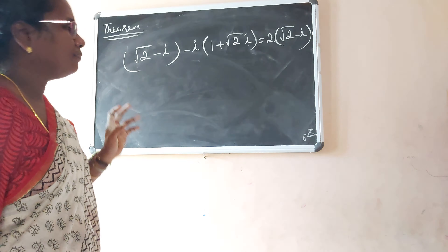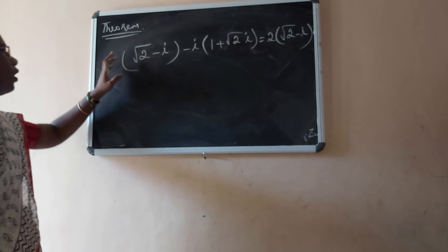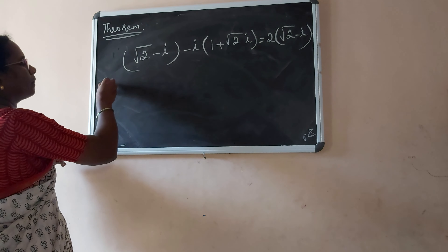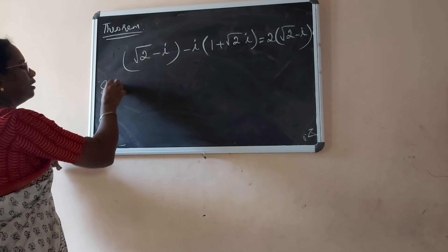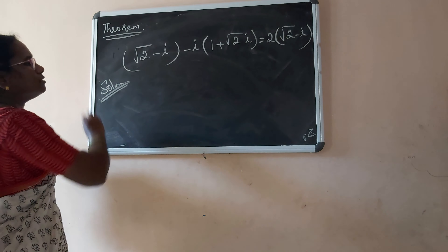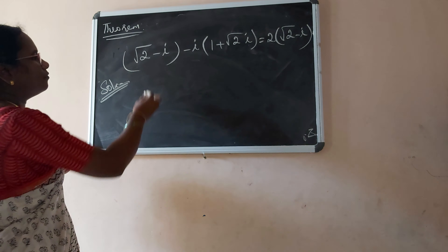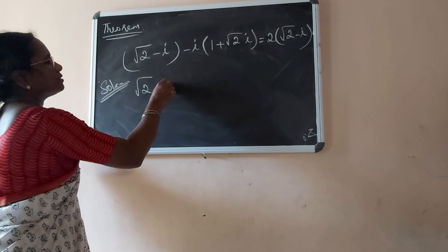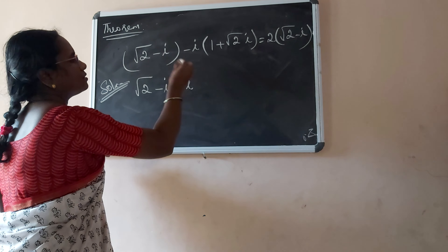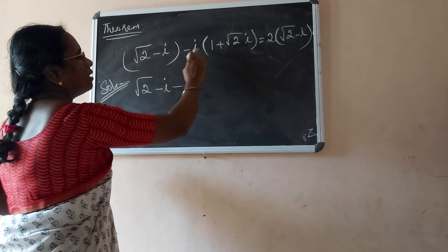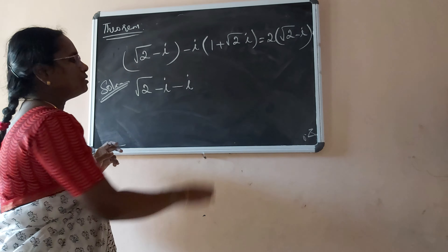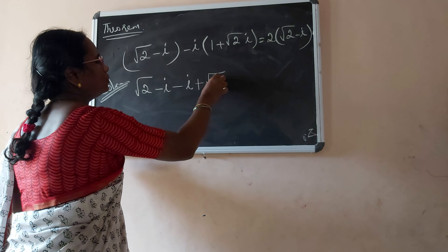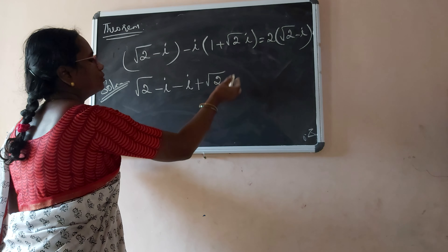Another remark: a complex number Z equal to X plus iY can be represented as an ordered pair of real numbers. For example, Z is equal to X plus iY can be written as the ordered pair (X, Y).